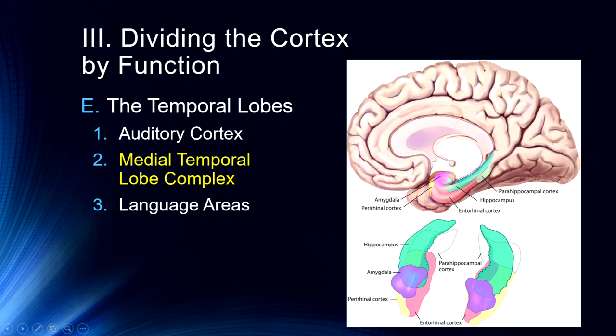Medial temporal lobe complex. This will be an area we spend a great deal of time with. In memory, in particular, we'll talk about patient HM and his loss of his medial temporal lobe complex, including his hippocampi. We talk about these as one system. This includes the amygdala, the hippocampus, perirhinal cortex, entorhinal cortex, and the parahippocampal cortex. All of these are important for understanding memory functioning.